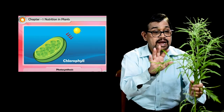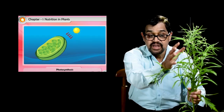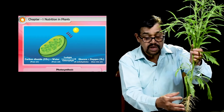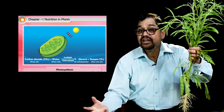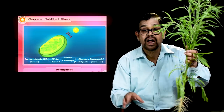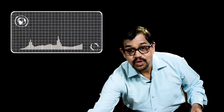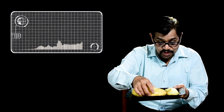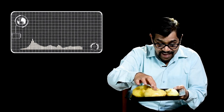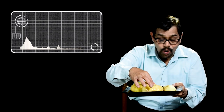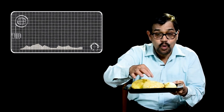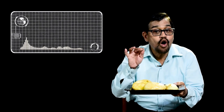Water is absorbed by osmosis and taken up to the leaves, where in the presence of sunlight and carbon dioxide, food is made. The food prepared can be stored in the leaves or in the stem. In plants like potato, it is stored in the rhizome — the stem part which is underground. The water came into the potato by the process of osmosis.